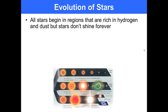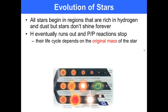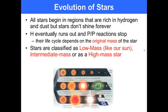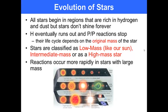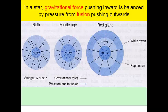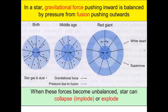All stars begin in regions that are rich in hydrogen and dust, but stars don't shine forever. They have a life span. Their life cycle depends on the original mass of the star. Hydrogen eventually runs out and fusion reactions eventually stop. Stars are classified as low mass, like our sun, intermediate mass, or as high mass. Reactions occur more rapidly with a high mass star. In a star, gravitational forces push material inward and this is balanced by the pressure from fusion which forces material out. When these forces become unbalanced, a star can collapse either implode or explode.